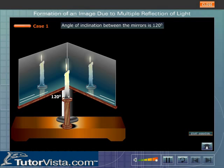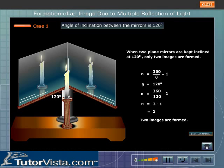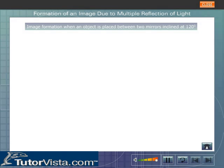When the angle of inclination between the mirrors is 120 degrees, you can see that when two plane mirrors are kept inclined at 120 degrees, only two images are formed. Go through the mathematical proof given here and click on the button to see the ray diagram for image formation when an object is placed between two mirrors inclined at 120 degrees.